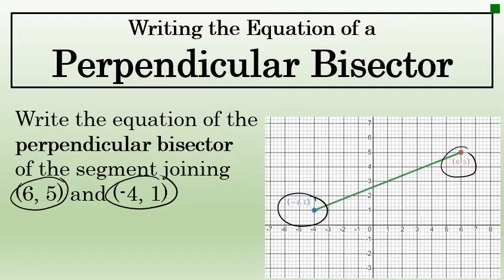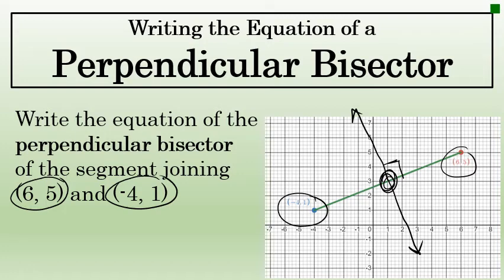A perpendicular bisector will go directly through the center — the midpoint of this segment — right around this area, and it will be perpendicular. As it intersects the line segment, it will form four right angles. Writing the equation of this black line, known as the perpendicular bisector of the line segment, can be accomplished in three steps.